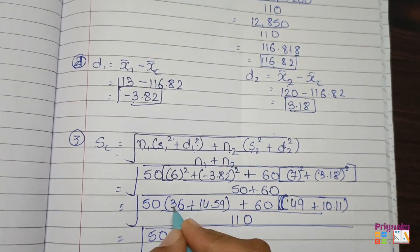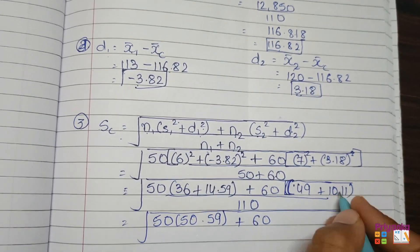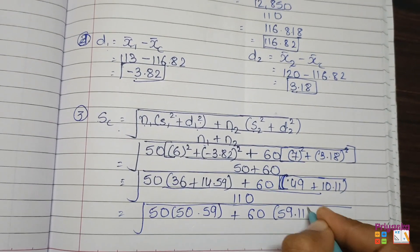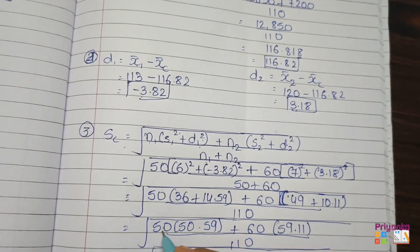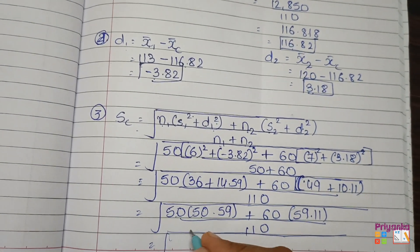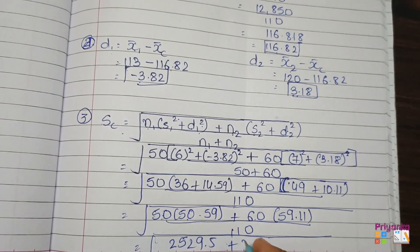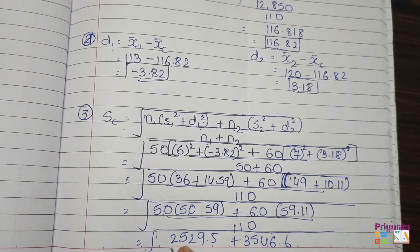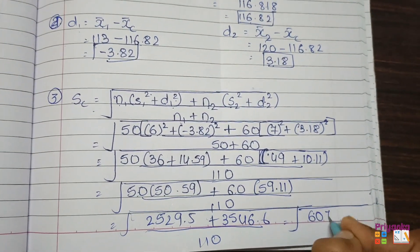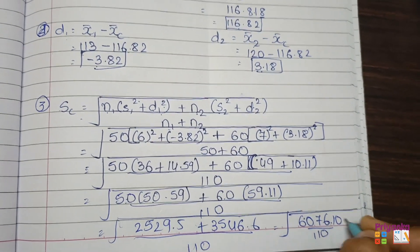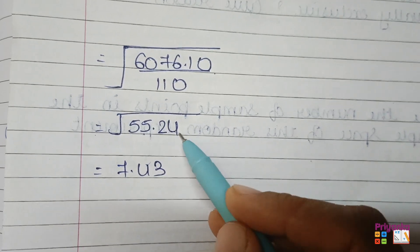Continuing: 50 times 50.59 equals 2529.5, plus 60 times 59.11 equals 3546.6, giving 6076.1 divided by 110 equals 55.24. Removing the square root gives 7.43. The combined standard deviation is 7.43.